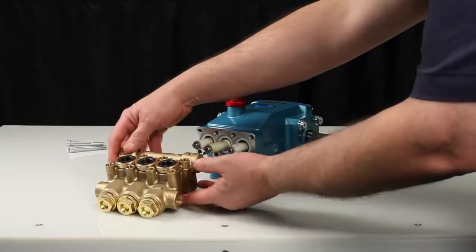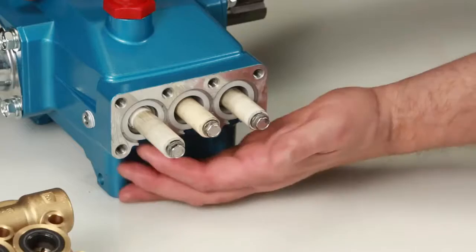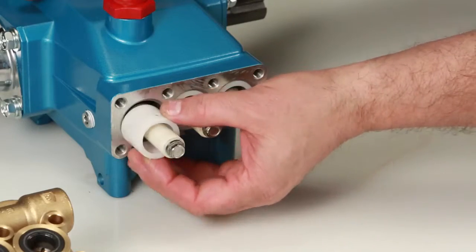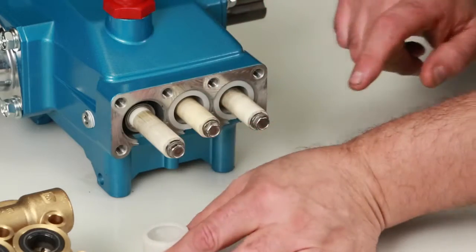Before reinstalling the manifold, be sure to replace the plunger retainer gasket included in the seal kit. Begin by removing the seal retainer. The seal retainer has two holes, one of which has a tab that is installed facing down into the slot of the crankcase.